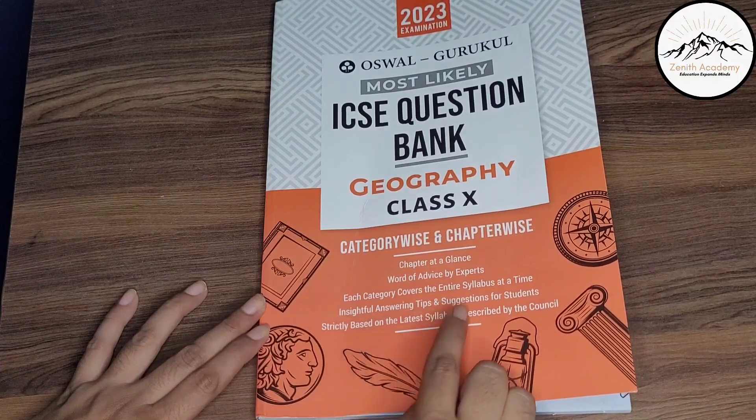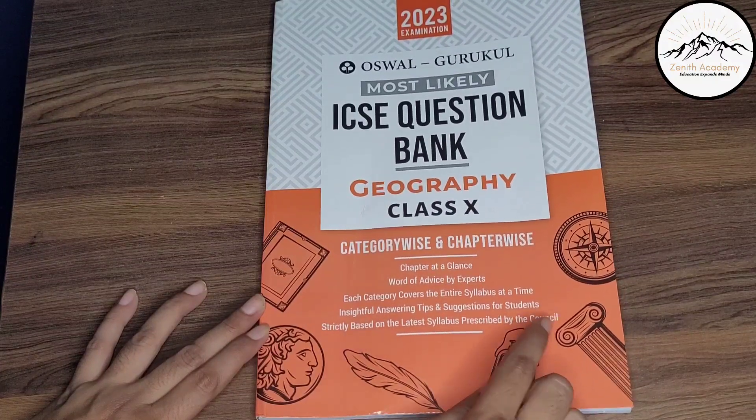So this is the best question bank for geography class 10. Here there are category wise and chapter wise questions. We have chapter at a glance, word of advice by experts. Each category covers the entire syllabus at a time. Insightful answering tips and suggestions are also given. It is strictly based on the latest syllabus prescribed by the council. Now this book is by Oswal Gurukul for 2023 examination. So let us have a look.